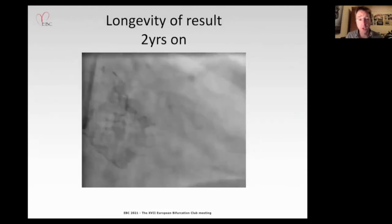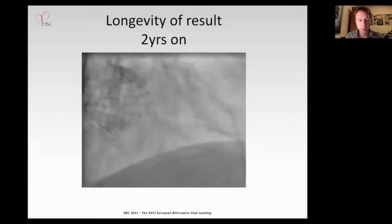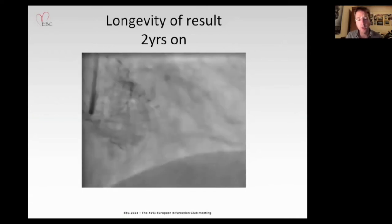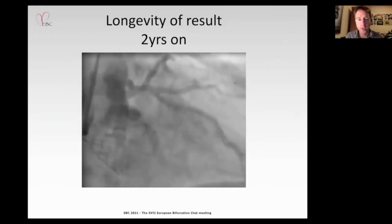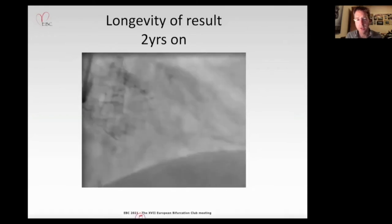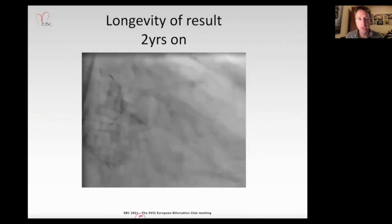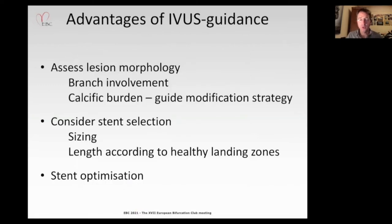This lady returned earlier this year with some atypical chest pain. Due to the high-risk nature of the previous intervention, she underwent angiography which gratifyingly shows an excellent ongoing result two years later. I hope this case has confirmed the advantages of IVUS guidance for left main PCI: assessing lesion morphology, recognizing calcification and guiding modification, stent sizing, and ultimately stent optimization for a long-term excellent result.